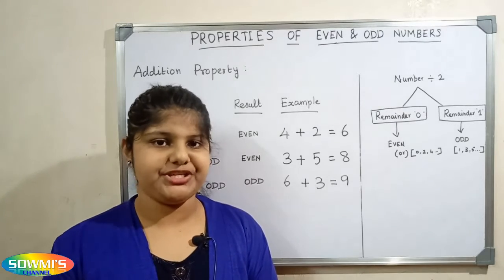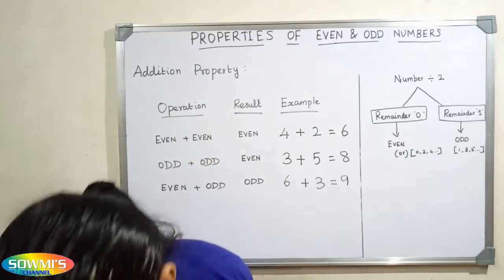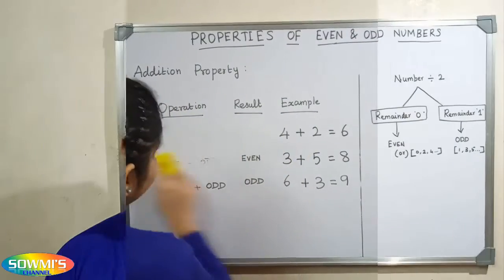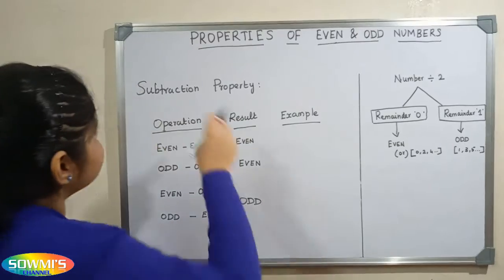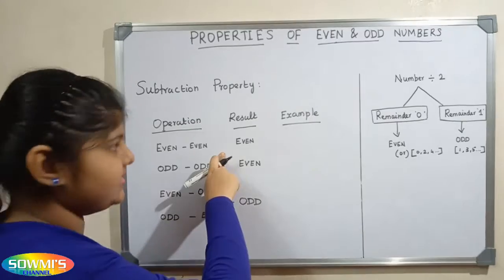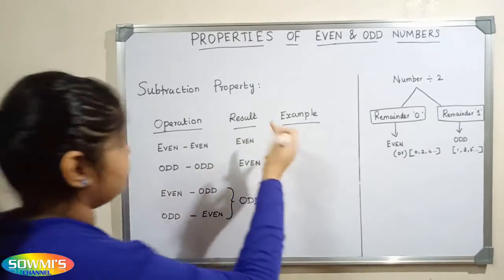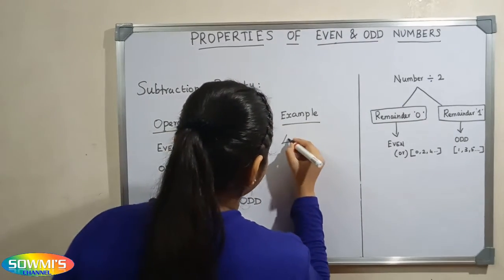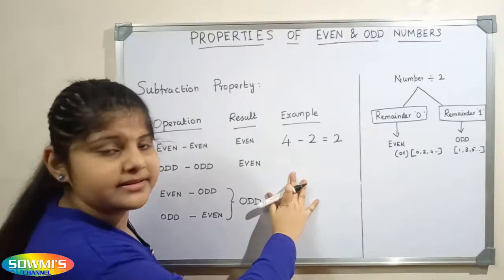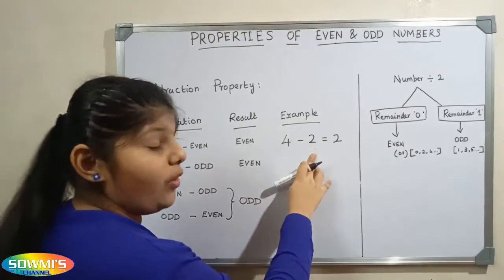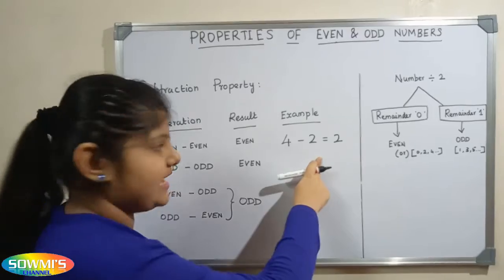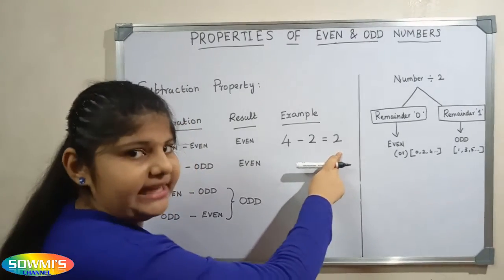Next we will see the subtraction property. When we subtract two even numbers, we will get the result as an even number. For example, 4 minus 2 is equal to 2. Here 4 and 2 are the two even numbers. When we subtract, we get 2, which is an even number.